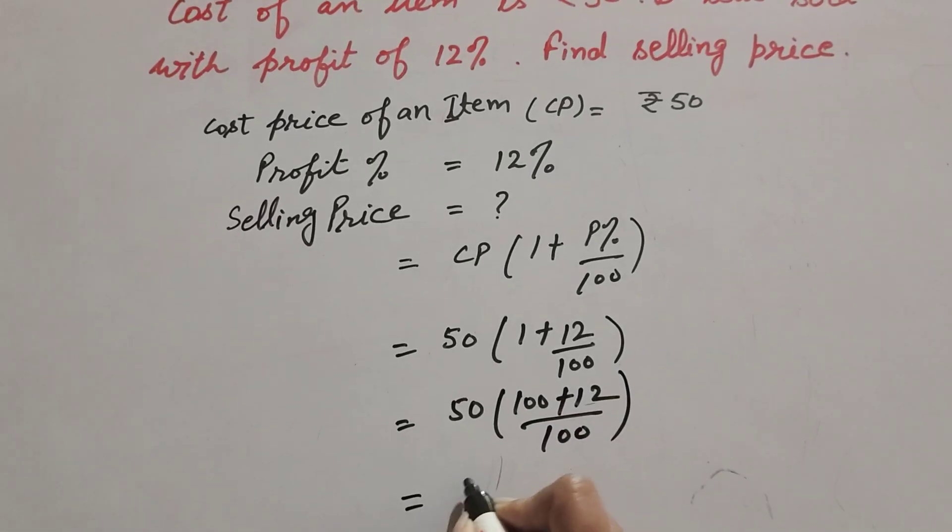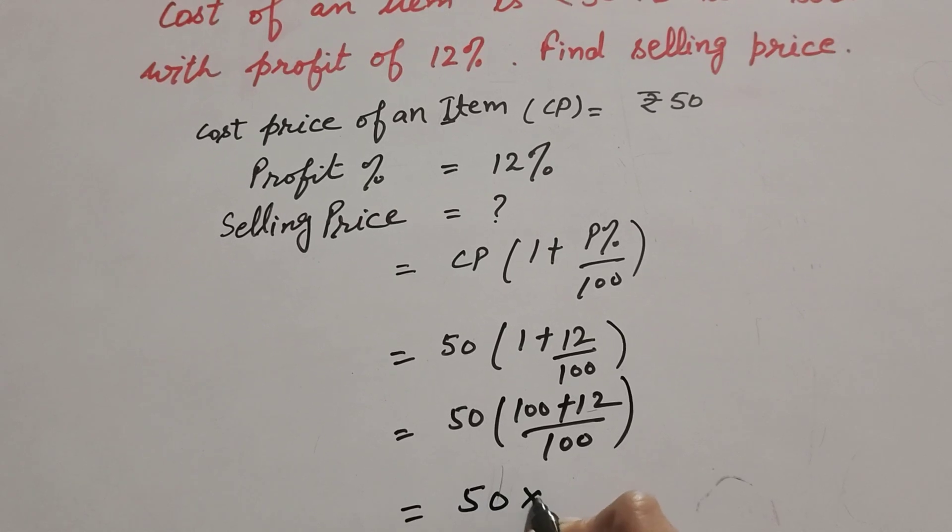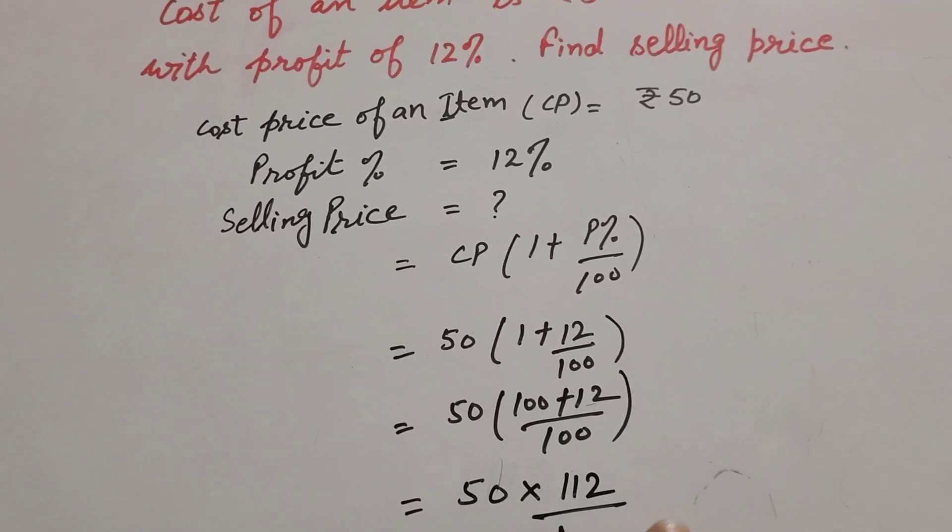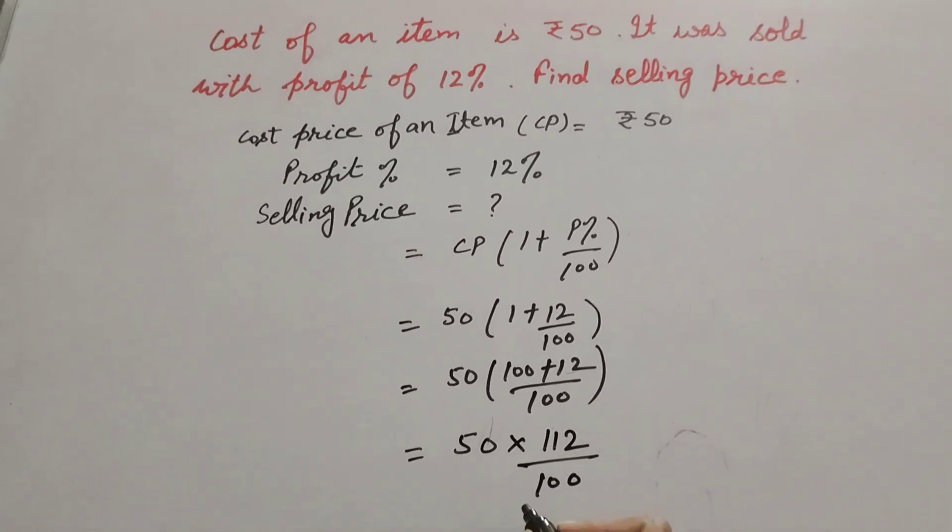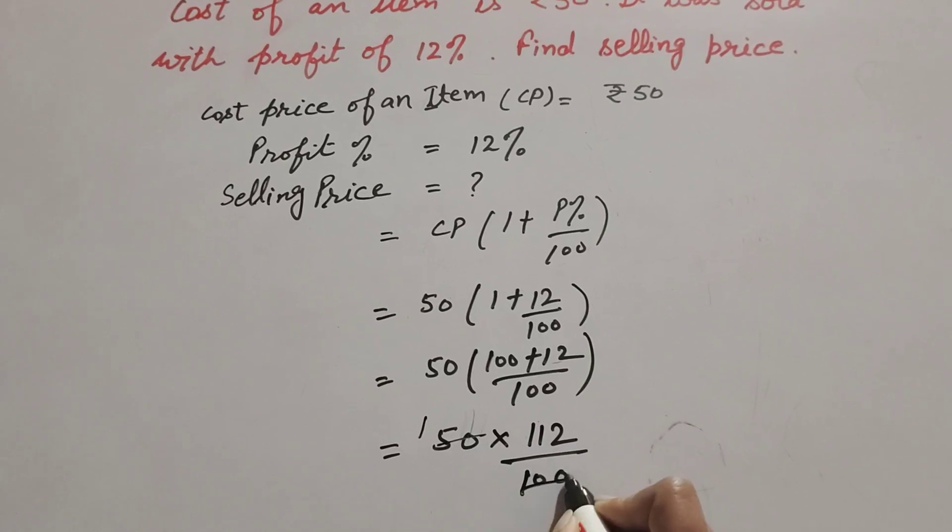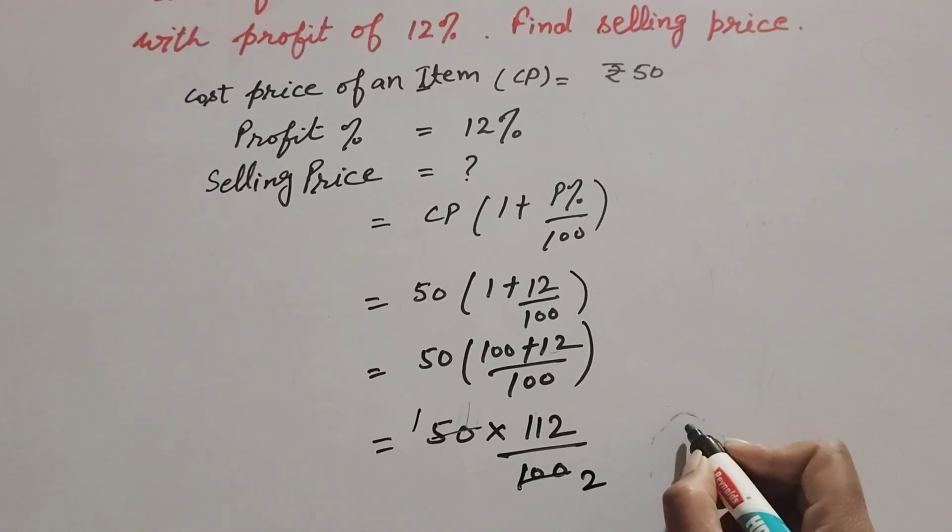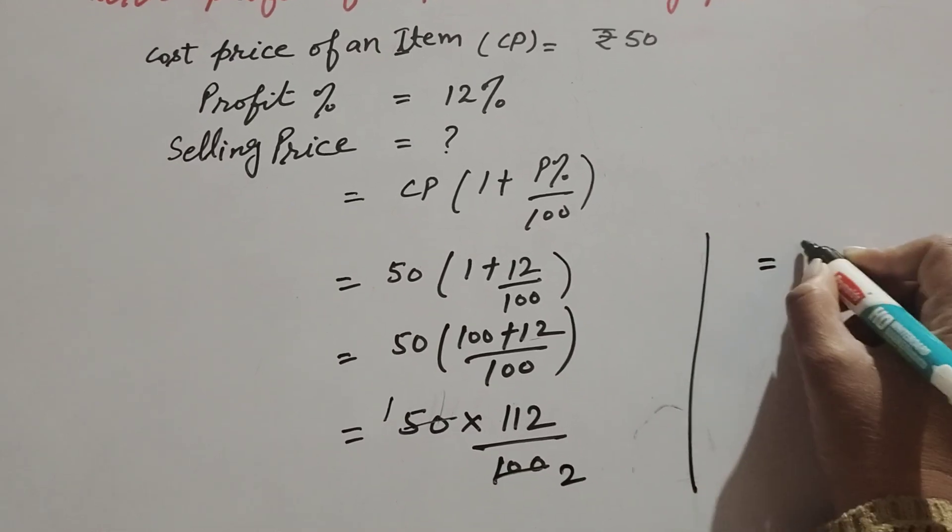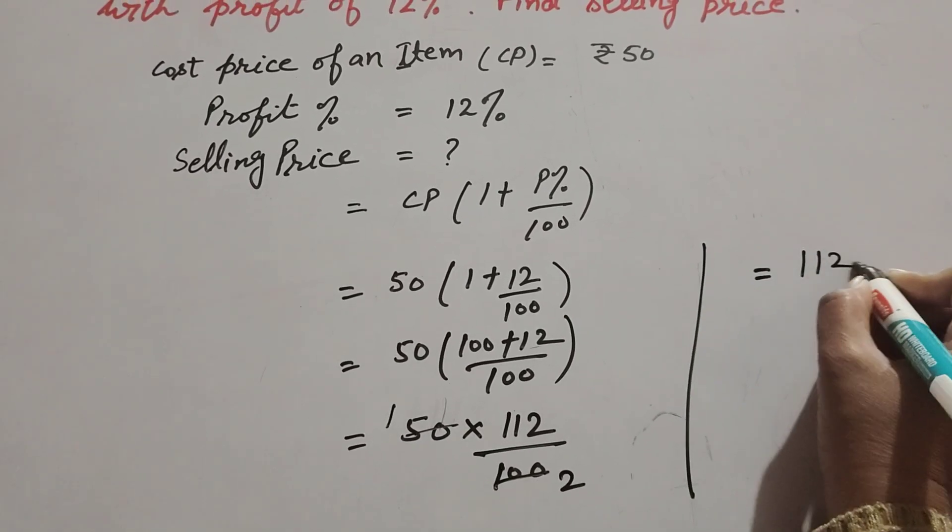So 50 and 100, both are divisible by 50, so we cancel them. 50 × 1 is 50, 50 × 2 is 100. It is equal to 112/2. 112 divided by 2, we get answer 56.